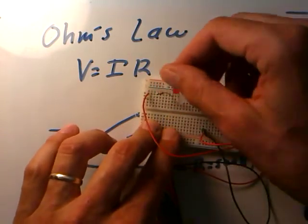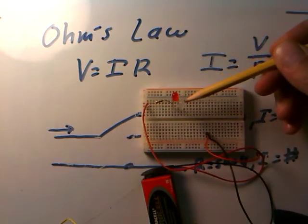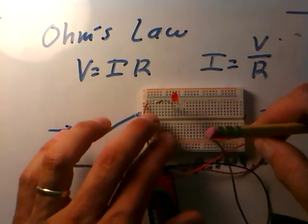It might be a bit hard to see on the camera, but I have the output of the first LED feeding the input of a second LED, and the flat edge, the edges of both of these are towards the right. And now if I connect them,